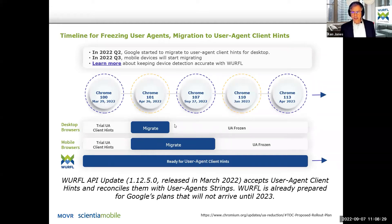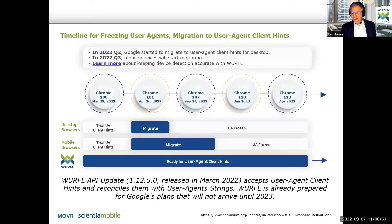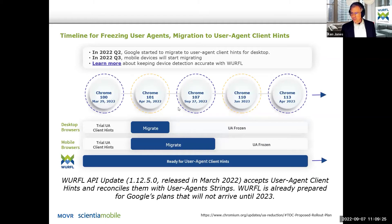Today we're currently reading every user agent client hint that comes to us, but we're seeing them primarily on the desktop. We're ready and accurately detecting devices. One question we had was how quickly are devices actually updating their Chrome, because you're not going to get these freezes happening until someone updates their Chrome browser. On the desktop, the most current supported version is on 82% of the devices we see. As of today, we're at version 105.